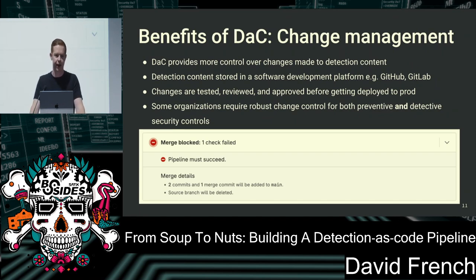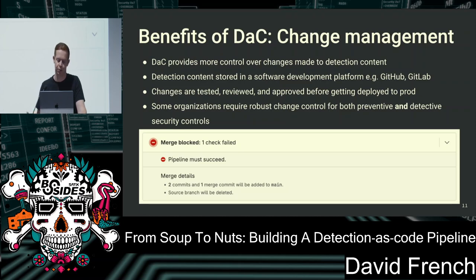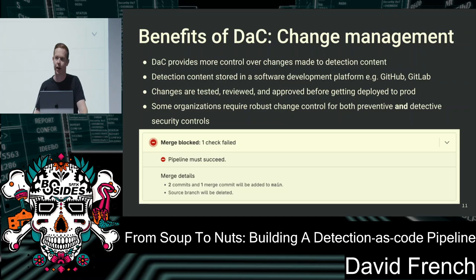Detection as code gives us more control over changes to our detection content. When rules are stored in a software development platform, we ensure changes are tested, reviewed, and approved before being pushed out. The engineer's changes can't be merged if the pipeline tests fail, preventing them from moving on until they fix the issue. For organizations in financial services, medical, or other highly regulated fields, this level of change control is a requirement.